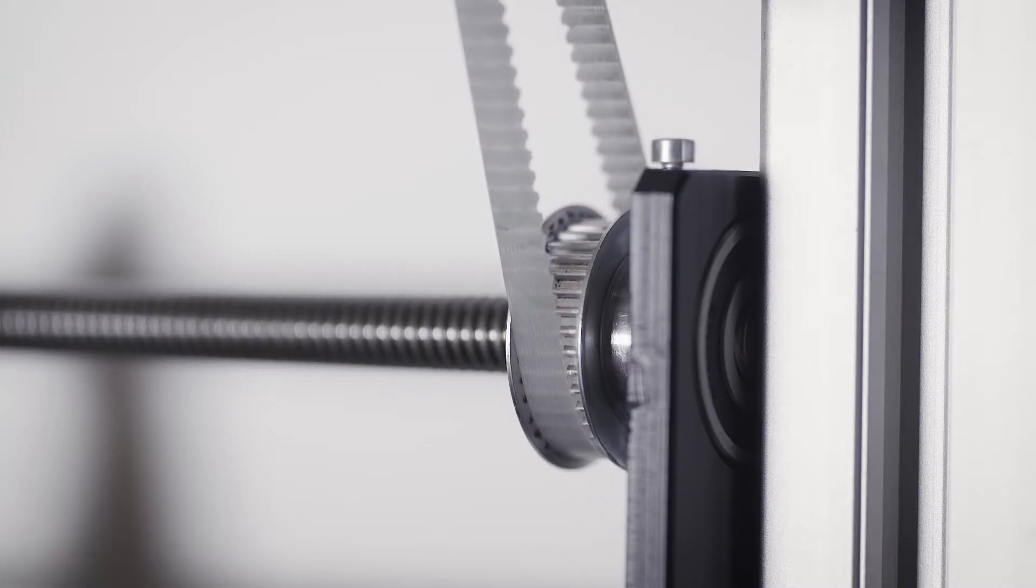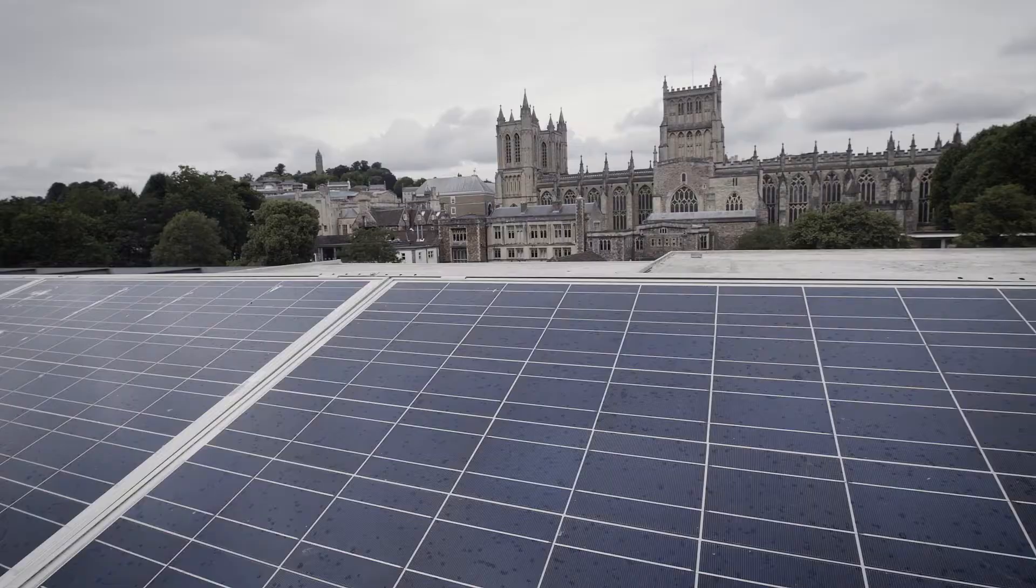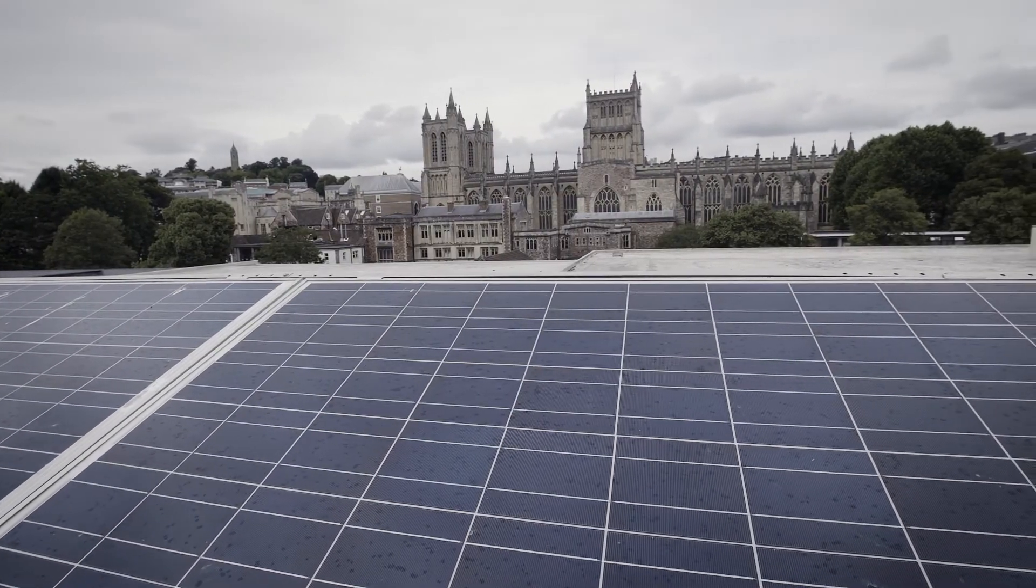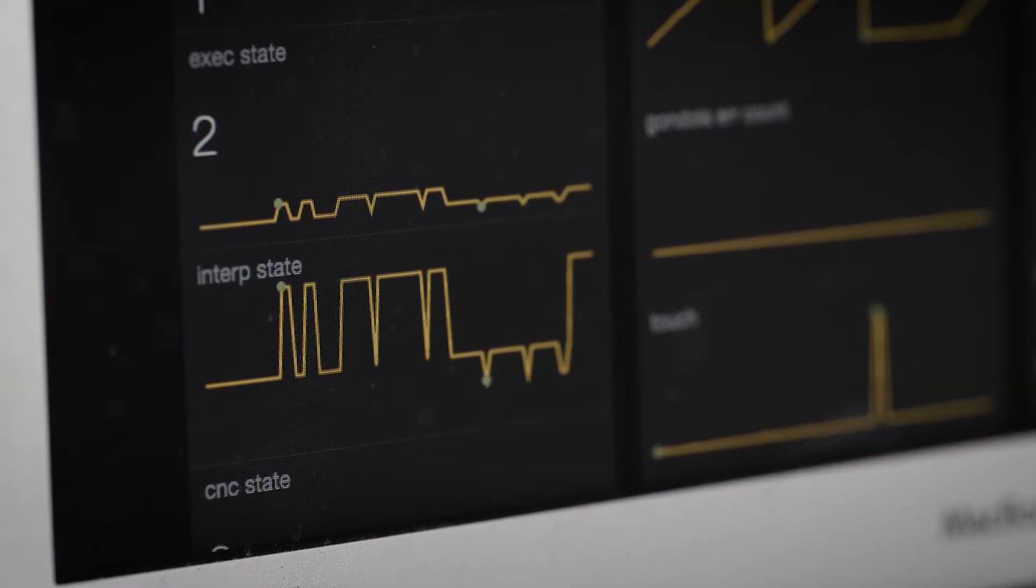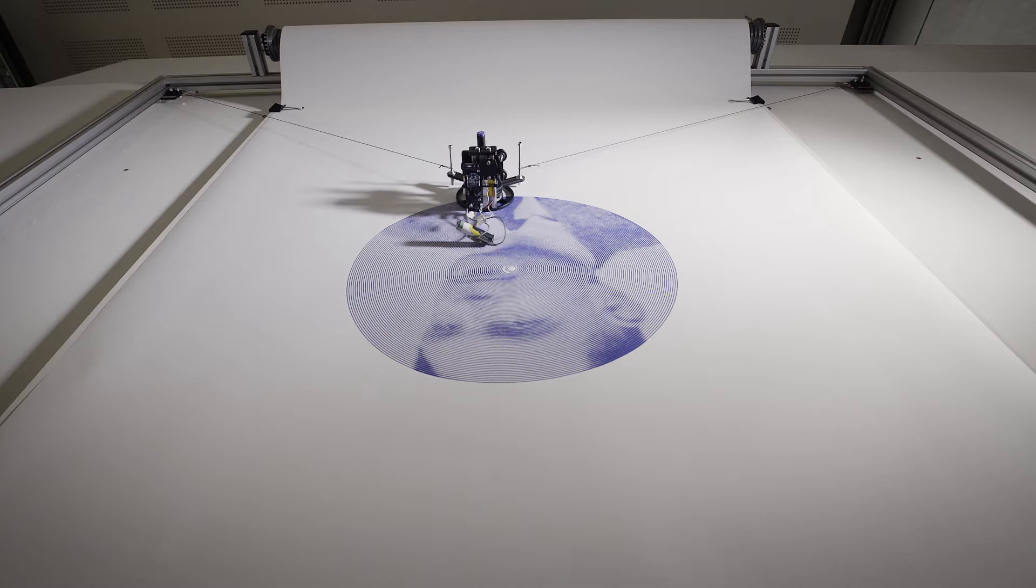We get a feed from the solar panels upstairs in the museum, process that into a graphical pattern, and then that gets drawn on the robot. That's not being drawn at the moment - this is Alan Turing upside down.